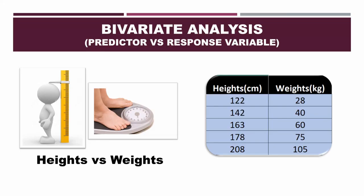In simple linear regression, you always analyze two variables. Here I have taken height and weight of a person. Height is the independent variable and weight is the dependent variable. As the height of a person increases, so does their weight. Height is not dependent on anything, but weight is dependent on height. So let's analyze heights and weights of persons and then predict, according to this data, what shall be the weight for a given height.